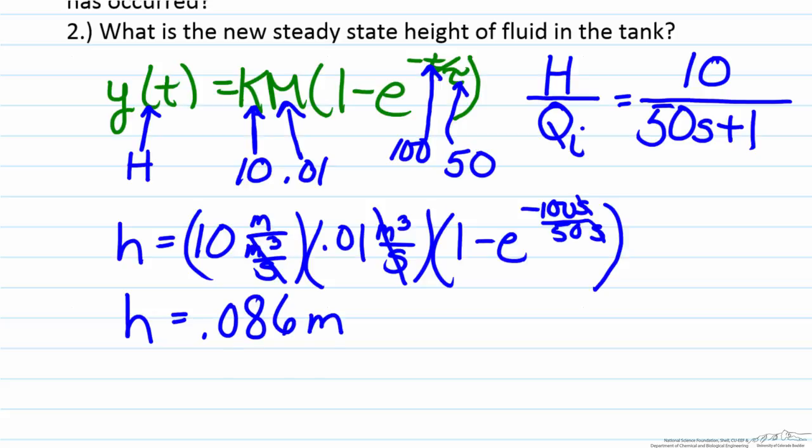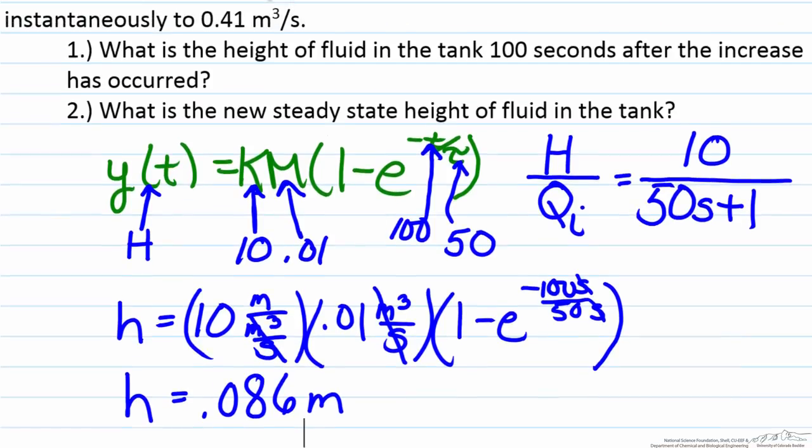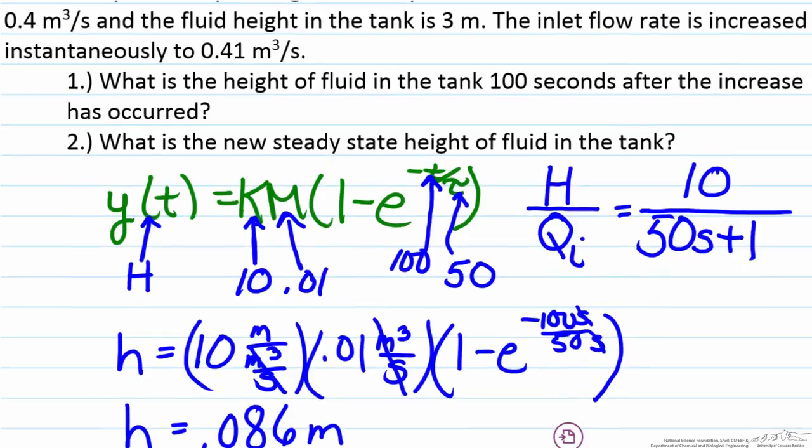But at first glance this may look strange because our initial steady state height inside the tank as given in the problem statement was three meters, yet all of a sudden our answer is .086 meters, so this doesn't make any sense. But it makes sense when we understand how we developed that y function.